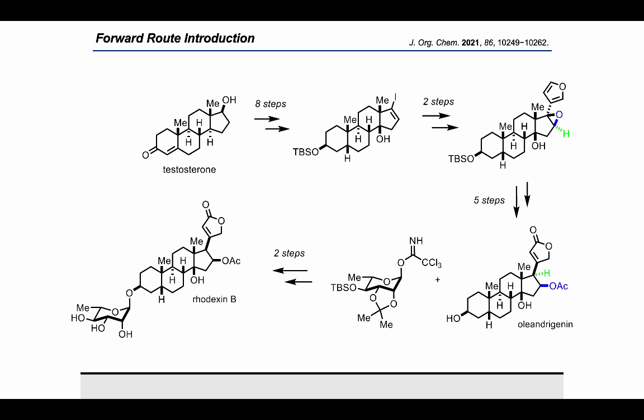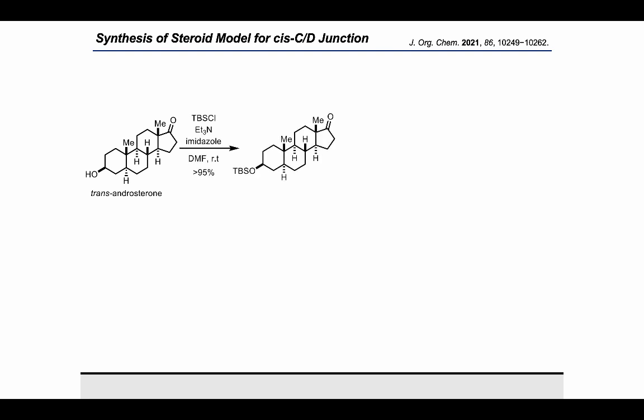With most synthetic methods, a model substrate from readily available commercial materials is a necessity for developing novel methods without burning precious intermediates. To this degree, we chose to start with transandrosanone as a non-regulated source of steroid precursor. TBS protection of the C3-hydroxyl group was performed in 95% yield, followed by silyl enol ether formation and subsequent Segusa-Eto oxidation to give the model enone intermediate.